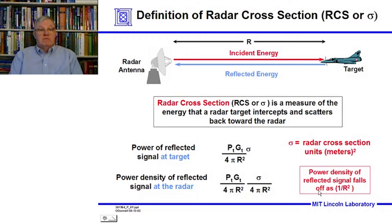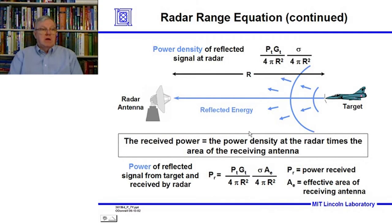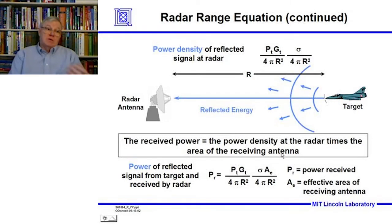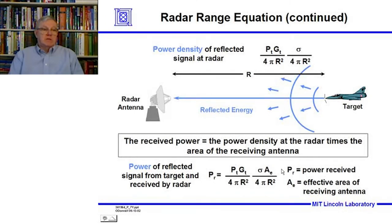Back at the radar, the received power is just the power density at the radar — calculated in the previous step — times the effective area of the receiving antenna, A sub E. This gives us the power of the reflected signal at the radar — a very important factor — representing the echo power received back from the target.